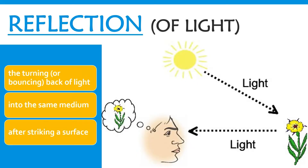Reflection of light is the turning or bouncing back of light into the same medium after striking a reflecting surface. In our everyday living, we can see things or objects because of the reflection of light. For example, the sun or light coming from the sun strikes a flower, and the light that strikes the flower is reflected back to our eyes, and the brain interprets it. That is why we see things — because of reflection of light.